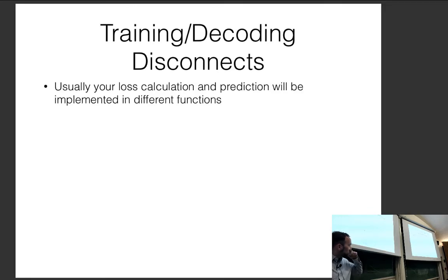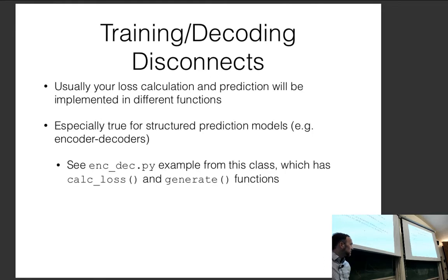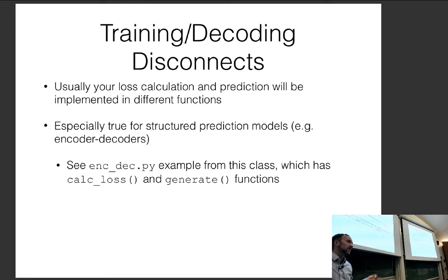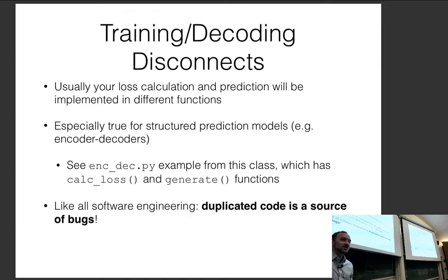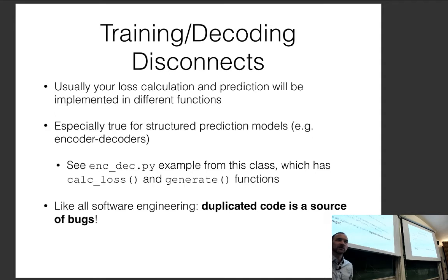This is a software engineering problem. A maxim of software engineering is that anytime you duplicate code that's supposed to do the same thing, it's a source of bugs, because duplicated code often doesn't do exactly the same thing. Also, loss calculation is usually mini-batched but generation is not — you calculate loss for multiple outputs at a time but generate one output at a time.